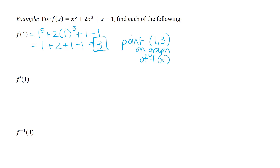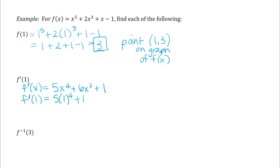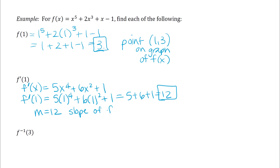The second question asks us to find f prime of 1. Using derivative rules, f prime of x is 5x to the fourth plus 6x squared plus 1. Plugging in 1 gives 5 plus 6 plus 1, which is 12. That's a derivative at x equals 1, representing a slope of 12 — the slope of the tangent line at the point 1 comma 3.